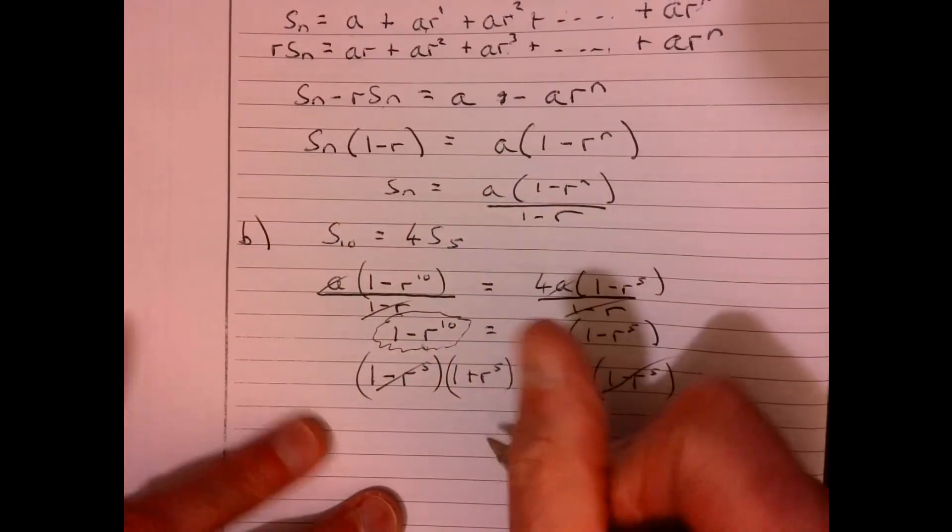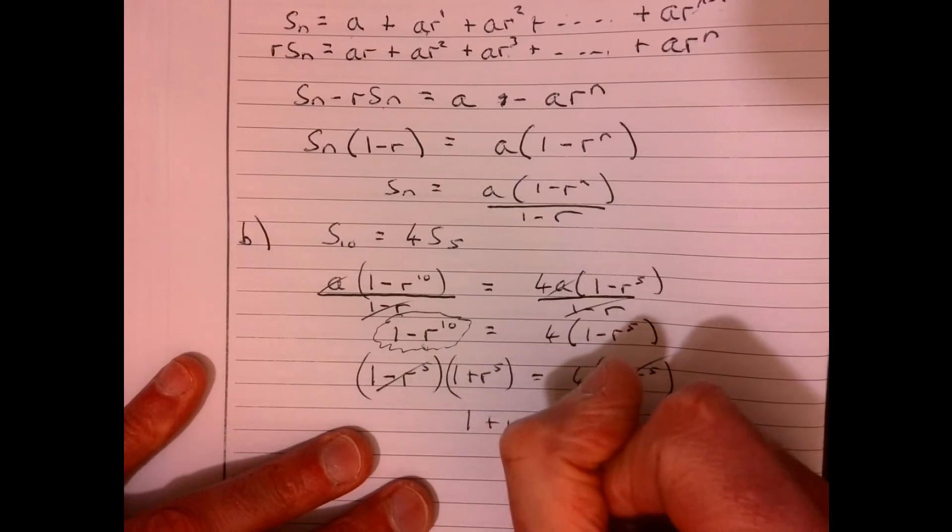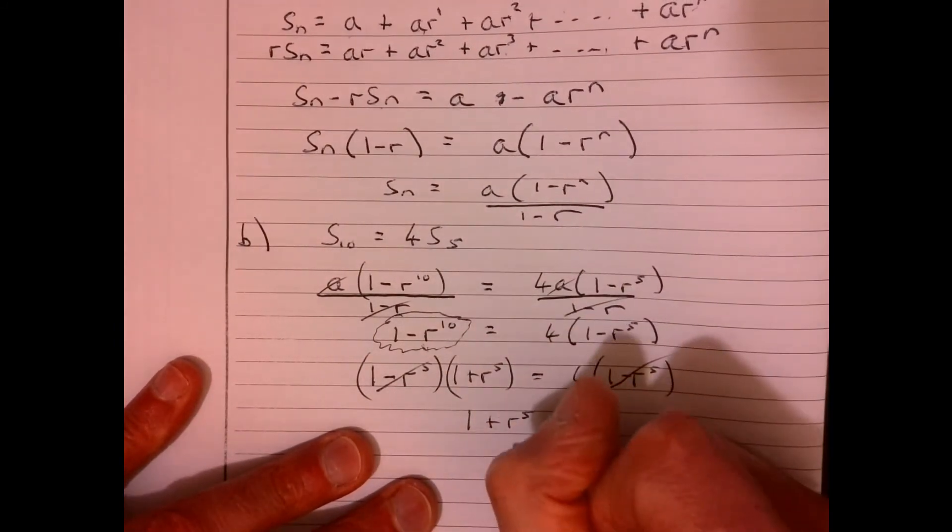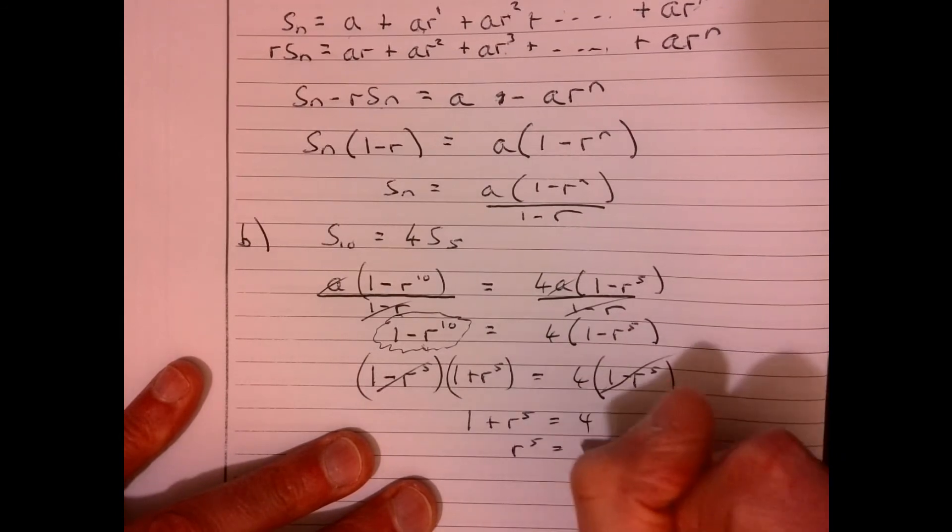They cancel out. So we've got 1 plus r to the 5 equals 4. Take away the 1 from each side, r to the power of 5 equals 3.